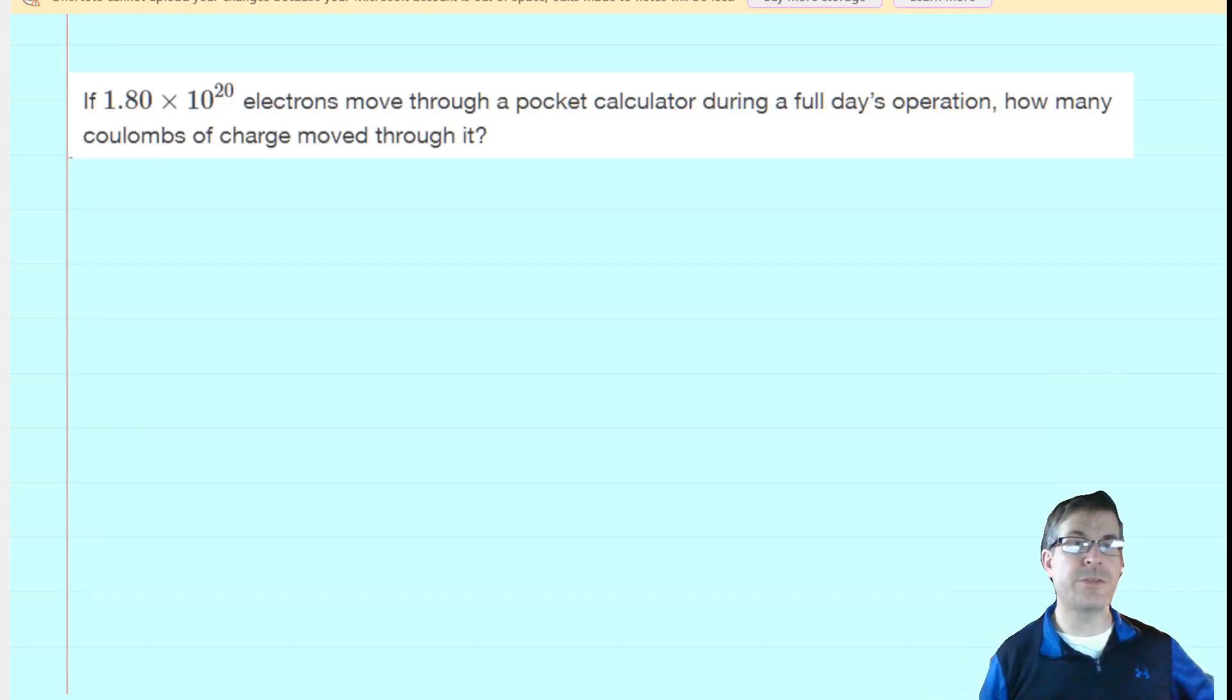If you haven't done so yet, make sure you pause the video and reread the problem before listening on. The question is asking us to determine the number of coulombs of charge moving through a calculator if 1.8 times 10 to the power of 20 electrons move through it.